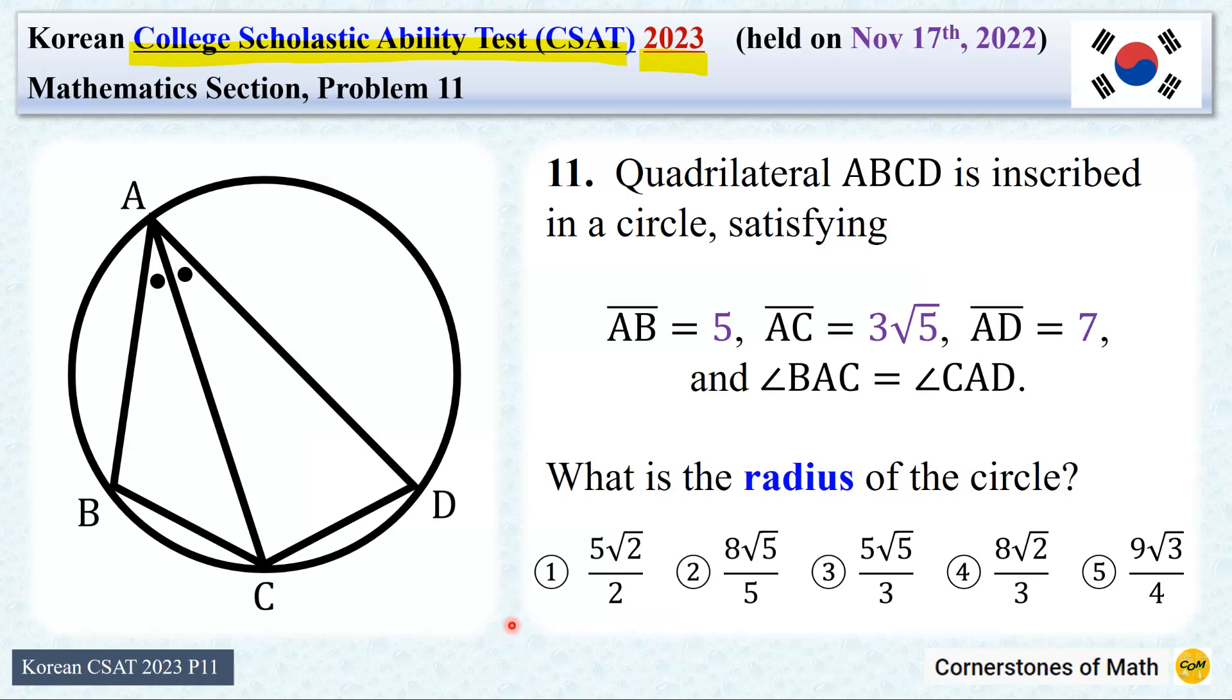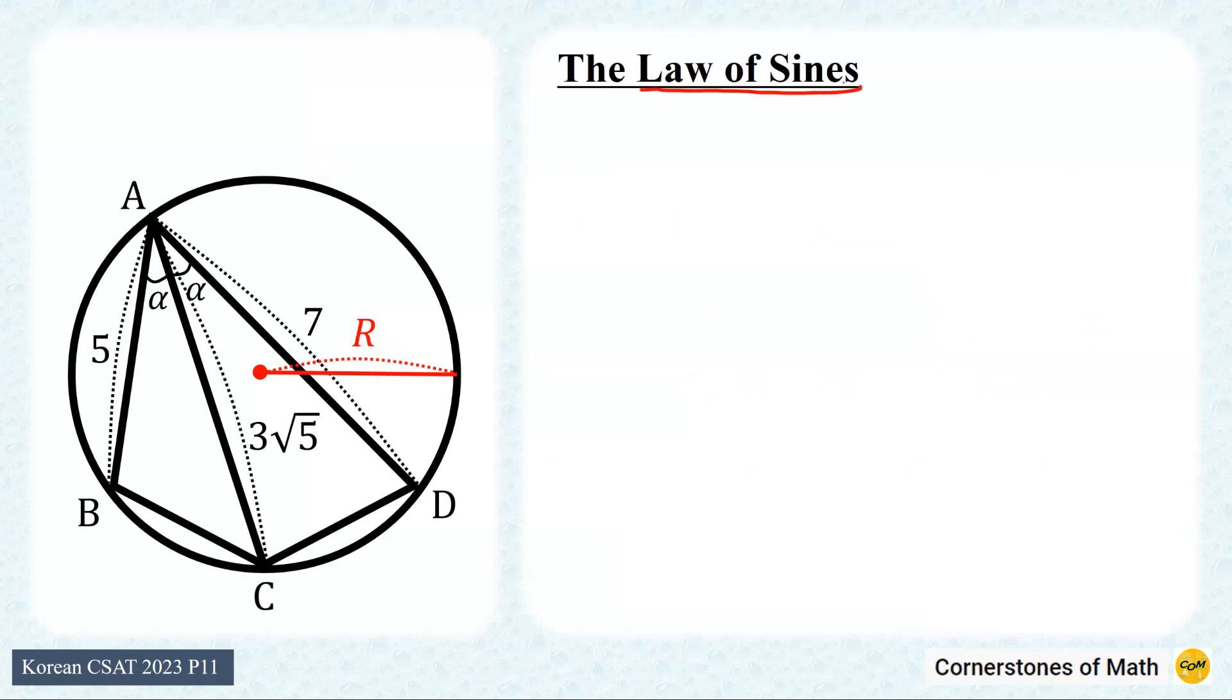Okay, let's solve this problem. So we are given a bunch of length here, such as, this length is 5, this length is 3 square root of 5, and this length is 7. Also, let's call these angles alpha. Now, we have to find this radius R, and the best way to do that is to use the famous law of sines, especially the law of sines including the radius of the circumcircle.